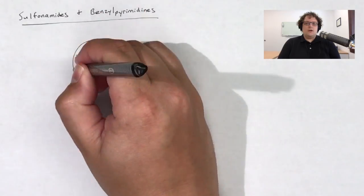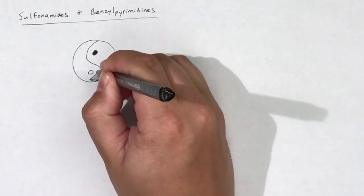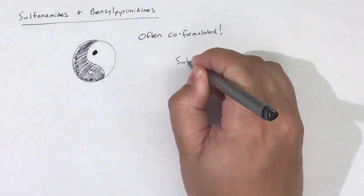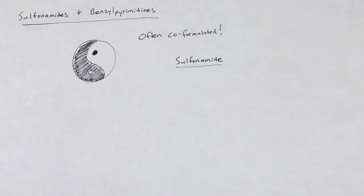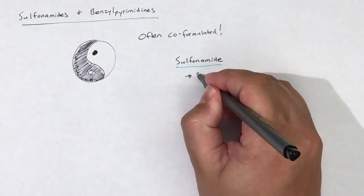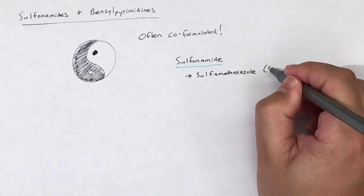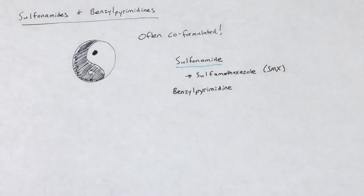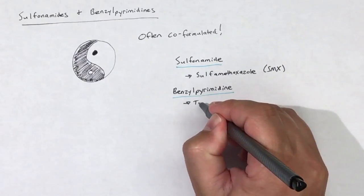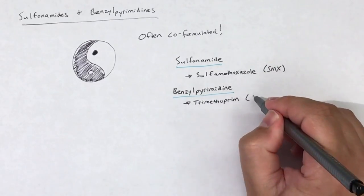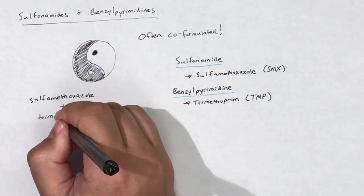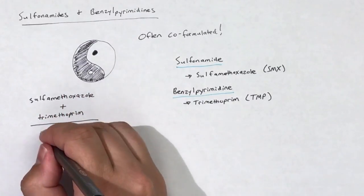Sulfonamides and benzopyrimidines are often found co-formulated together. There are a few different sulfonamides that can be used as antimicrobial agents, but they are seldom used as monotherapy in the clinic. The sulfonamide that I'll focus on in this video is sulfamethoxazole. The only benzopyrimidine clinically available is trimethoprim. Trimethoprim can be given alone or in combination with sulfamethoxazole. When trimethoprim is given in combination with sulfamethoxazole, it is often referred to as TMP-SMX, with TMP as an abbreviation for trimethoprim and SMX as an abbreviation for sulfamethoxazole.